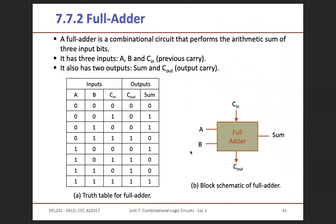Now let's look at the full adder. The full adder is 3-bit, where you have two inputs A and B and one previous carry (C-in). It has two outputs: C-out and sum. The truth table for the full adder shows that it is a combinational circuit that performs the arithmetic sum of three input bits. It has three inputs A, B, and C-in, where C-in is the previous carry, and two outputs sum and C-out. This is the block schematic diagram for the full adder.